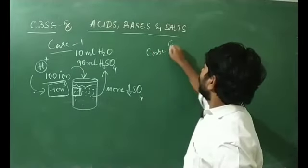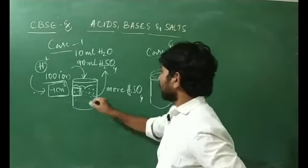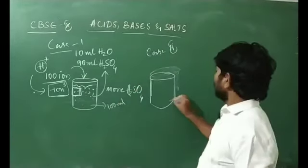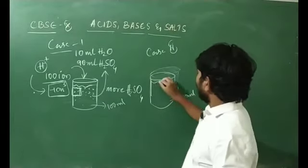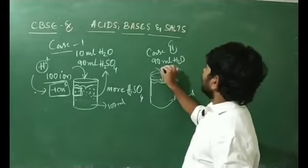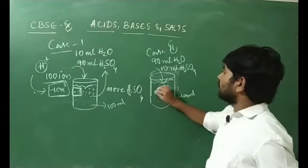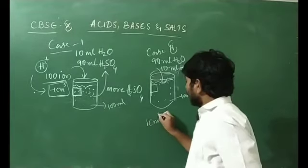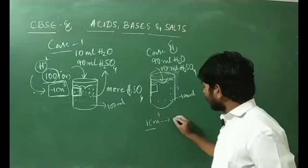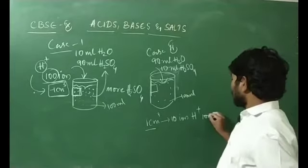In Case 2, using the same 100 ml beaker, I am now taking 90 ml of water and adding only 10 ml of H₂SO₄. We will still get ions, but now if you take 1 cm³ area from this solution, you may only get 10 H⁺ ions — compared to 100 H⁺ ions in Case 1.